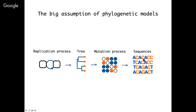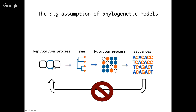What most of these models assume is that the mutation process is independent of the underlying replication process. Another way of saying this is that there's no feedback between changes in sequences and the replication process. If a beneficial or deleterious mutation occurs in a sequence of a particular lineage, the fitness of that mutation does not feed back and affect the underlying replication process giving rise to the tree. We make this independence assumption because it results in statistically tractable models.